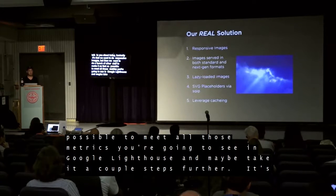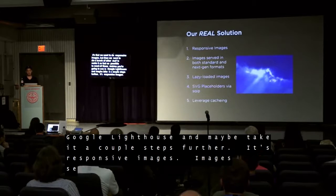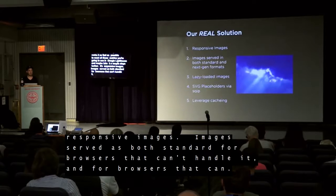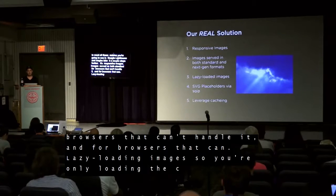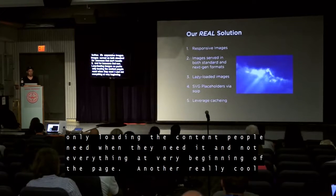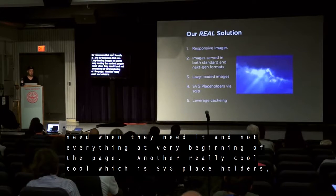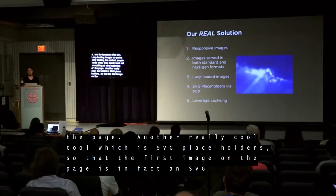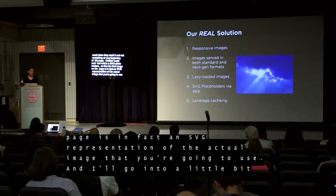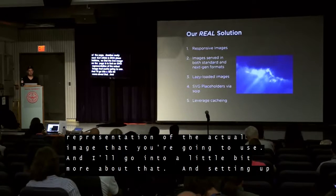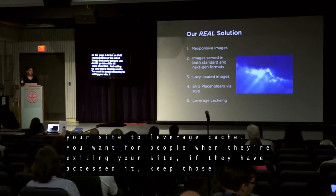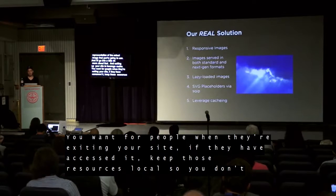To get into the full depth of what I'm here to talk about today: we want to do responsive images, but then a bunch of other stuff to make it as fast as possible. That means: images served as both regular images for browsers that can't handle WebP and as WebP for those that can; lazy loading images so you're only loading content when people need it; SVG placeholders so the first image that loads is an SVG representation of the actual image; and setting up your site to leverage caching so that you don't have to send resources across the network again.